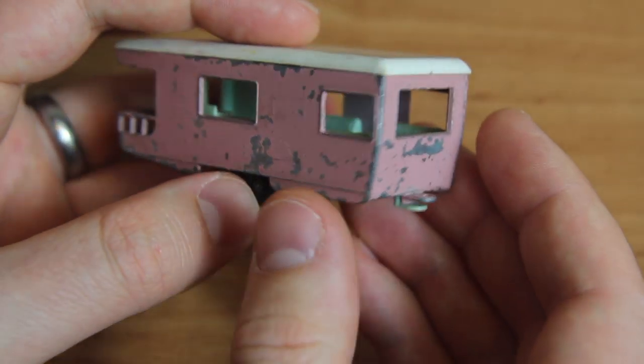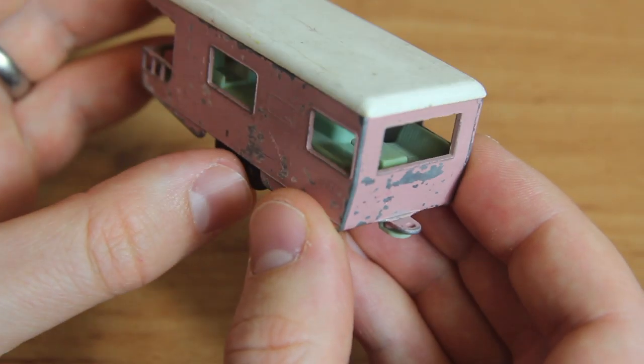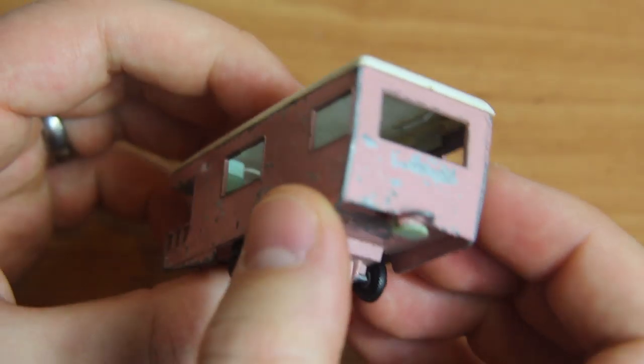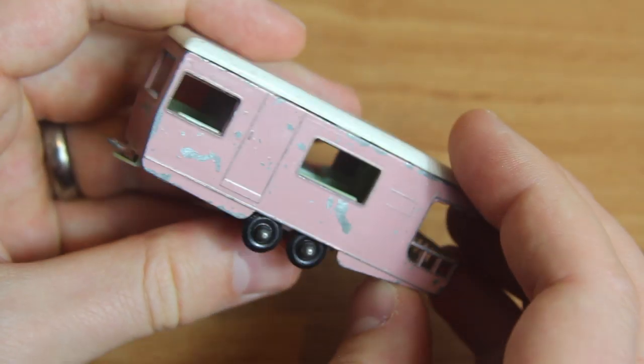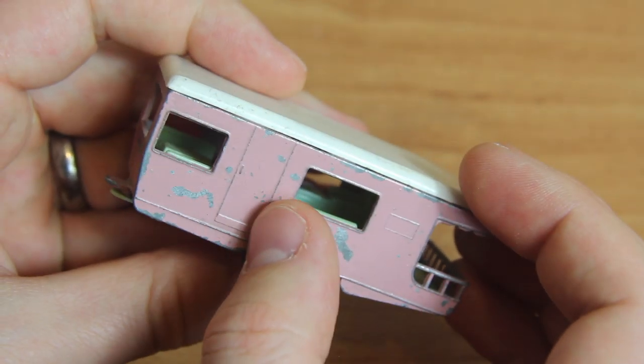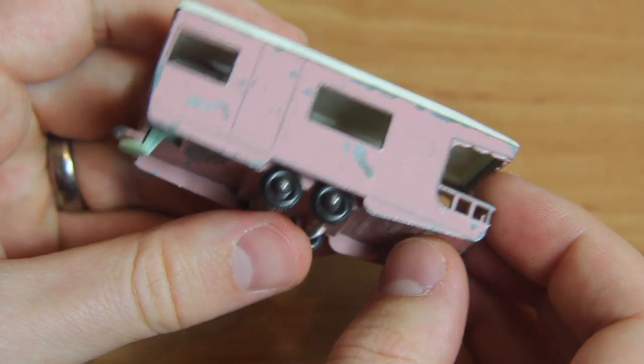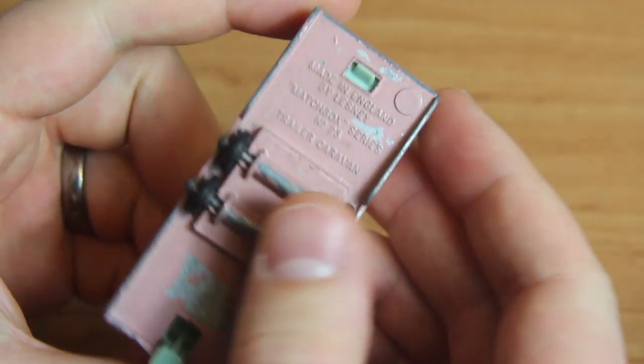Hello and welcome to Diecast Restos. I'm Jason and this is the 23D trailer caravan. This is the pinkest regular wheels model I could find and it was introduced in 1965 and lasted through to 1970, replaced by the VW camper.